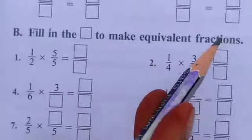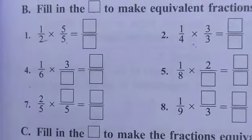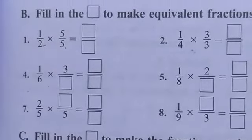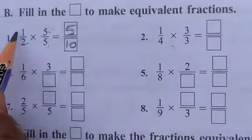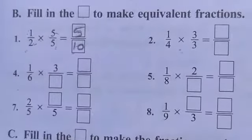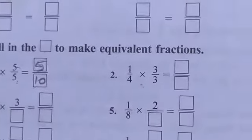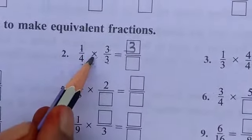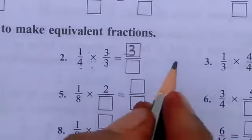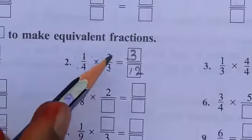Remaining problems you do for homework. Fill in the box to make equivalent fractions. One by two is equal to five by ten. Next problem: one by four — multiplying numerator and denominator by three gives 1 × 3 = 3 and 4 × 3 = 12, so one by four is equal to three by twelve.